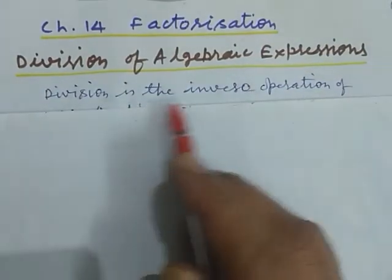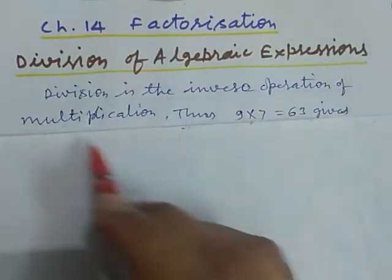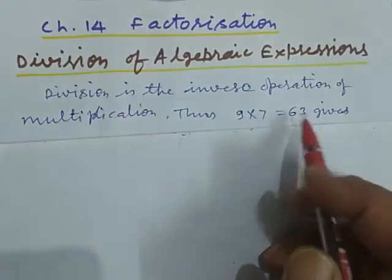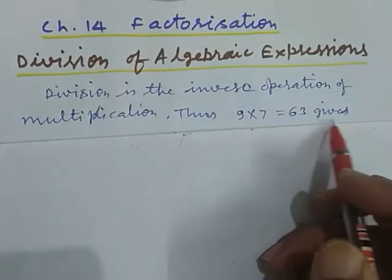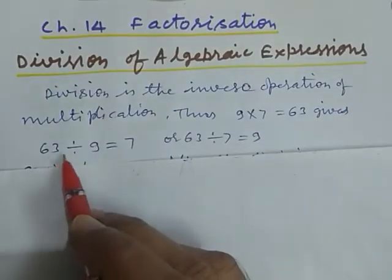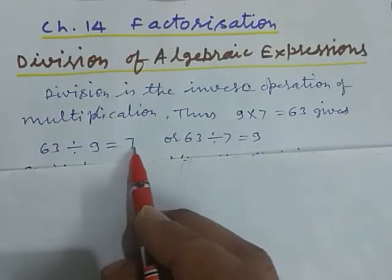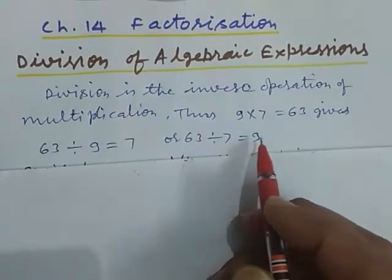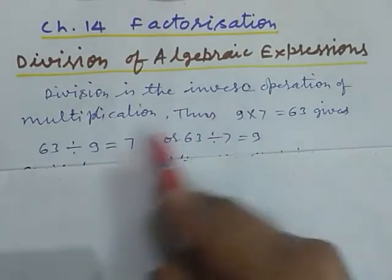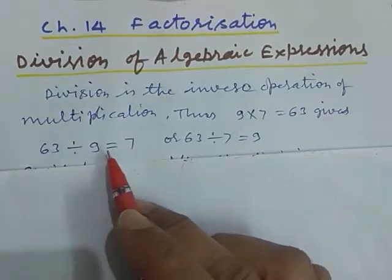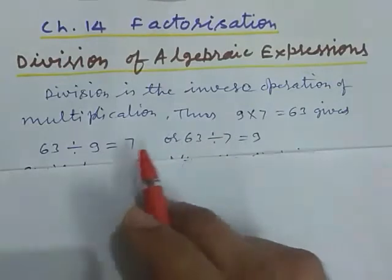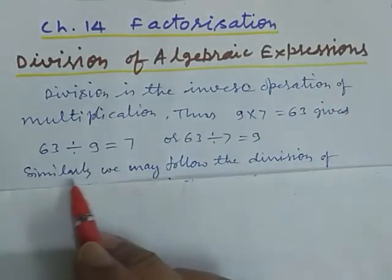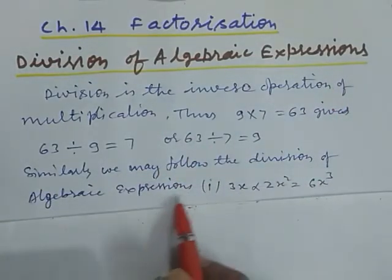Division is the inverse operation of multiplication. Thus, 9 into 7 equals 63 gives us 63 divided by 9 equals 7, or 63 divided by 7 equals 9. Similarly, we may follow the division of algebraic expressions like that.